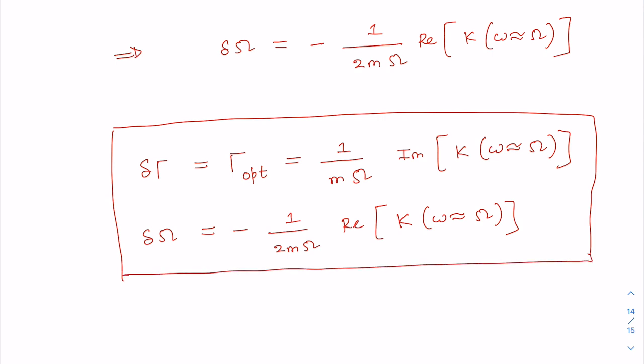In the next class we will analyze the expression for K(omega) in detail. To summarize today's lecture: we discussed the classical regime of cavity quantum optomechanics. When coupling between light and mechanics is weak, we can go to the linearized optomechanics regime. The classical analysis leads to an extra frequency shift of the mechanical oscillator (optical spring effect) as well as extra damping (optomechanical damping). In the next lecture we will also discuss the Langevin equation formalism, starting with the classical Langevin equations.